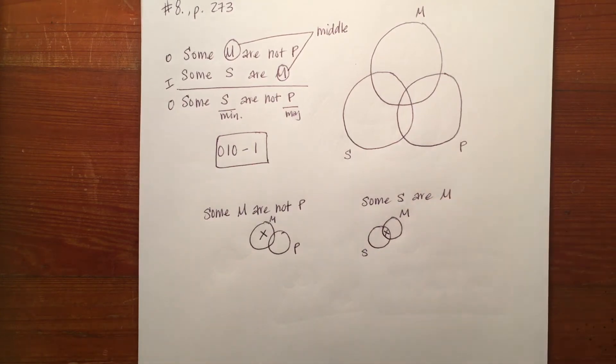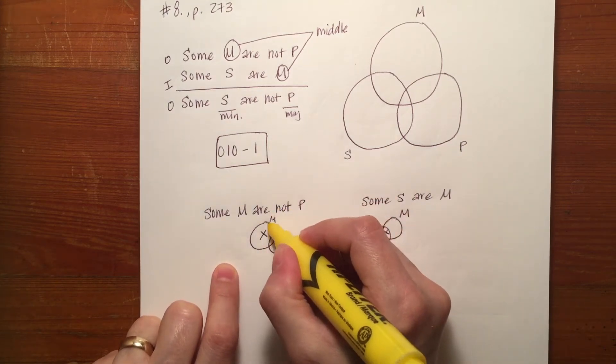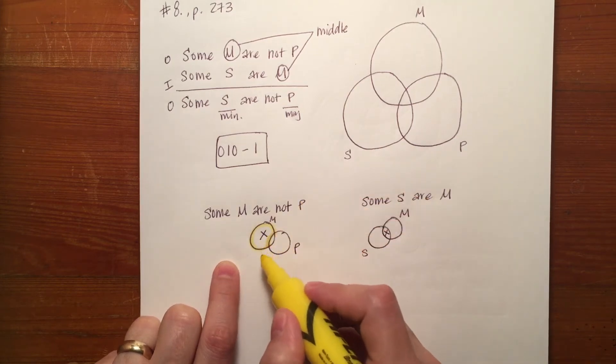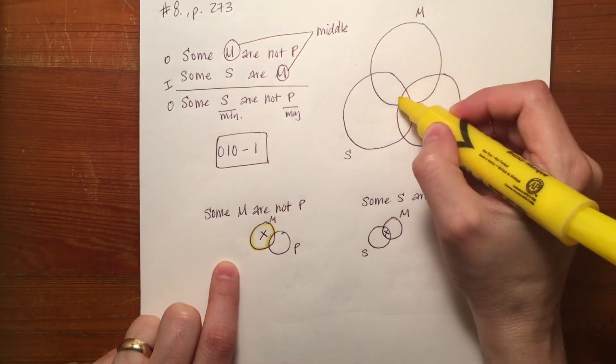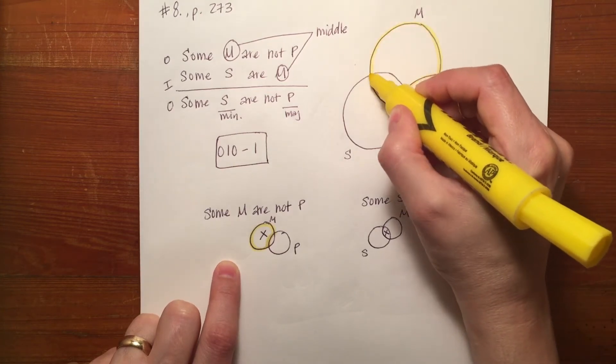Now what we need to do is translate that into the larger Venn diagram. So let's look at the first one. If I highlight this larger part of M, this pac-man, right, that's where my X should go. So that same spot is here in the larger diagram.